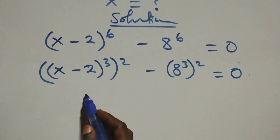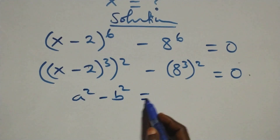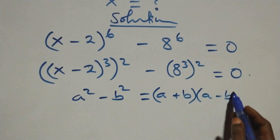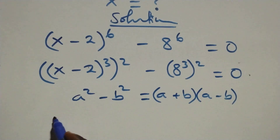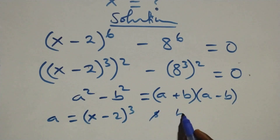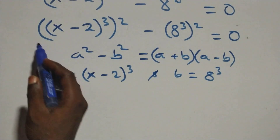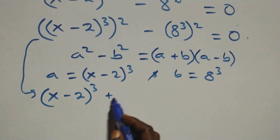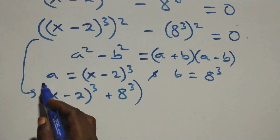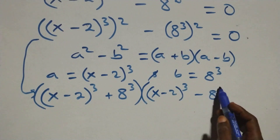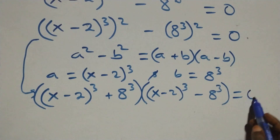This follows when we have a squared minus b squared, which is the same as (a + b)(a − b). Here, a stands for (x − 2) raised to power 3, and b stands for 8 raised to power 3. So what we have becomes: [(x − 2)³ + 8³] × [(x − 2)³ − 8³] = 0.